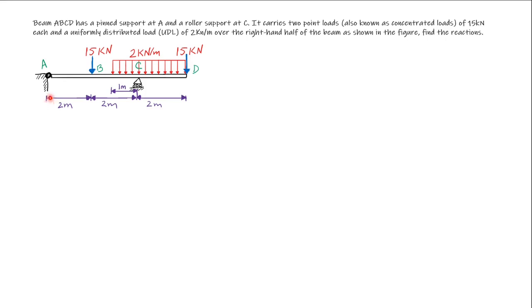In this example we have a beam ABCD. It has a pin support at point A and a roller support at point C. It carries two point loads, also known as concentrated loads, of 15 kN each and a uniformly distributed load UDL of 2 kN per meter over the right hand half of the beam as shown in the figure. Find the reactions.